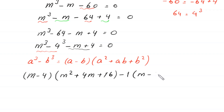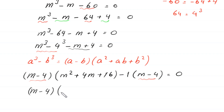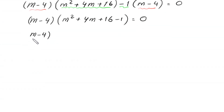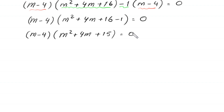From the remaining terms negative m plus 4, we factor out negative 1, giving negative 1 times (m minus 4). Now (m minus 4) is a common factor, so we factor it out: (m minus 4)(m squared plus 4m plus 16 minus 1) equals 0, which gives (m minus 4)(m squared plus 4m plus 15) equals 0.